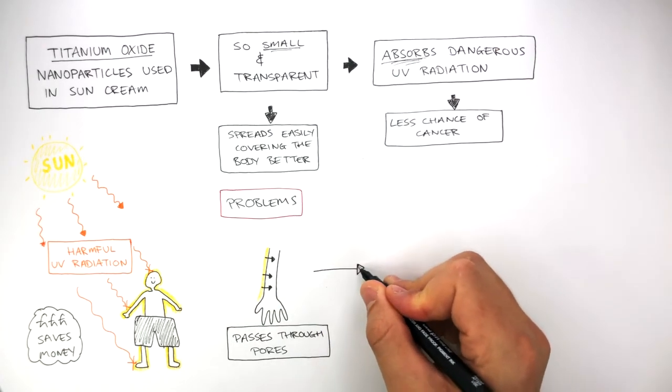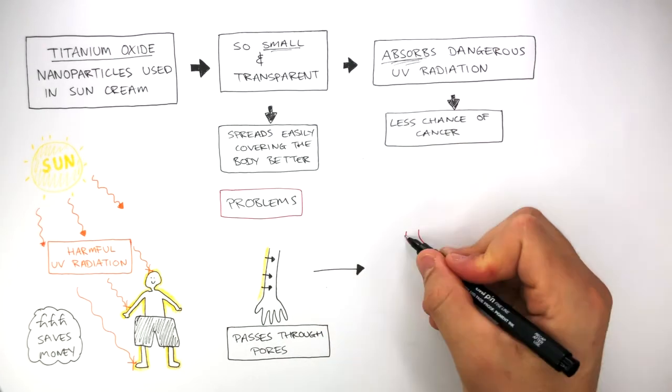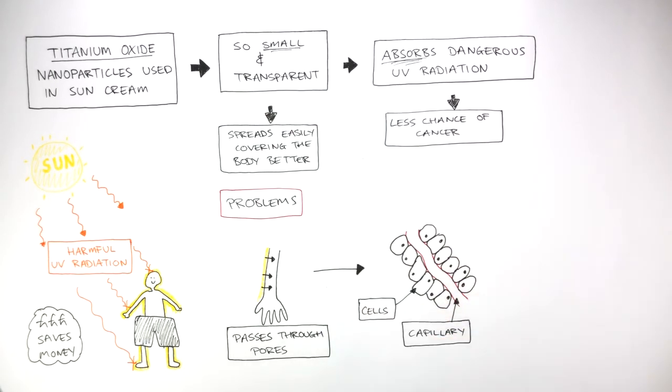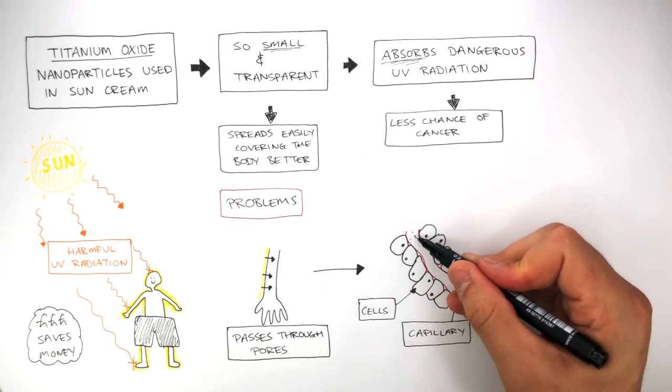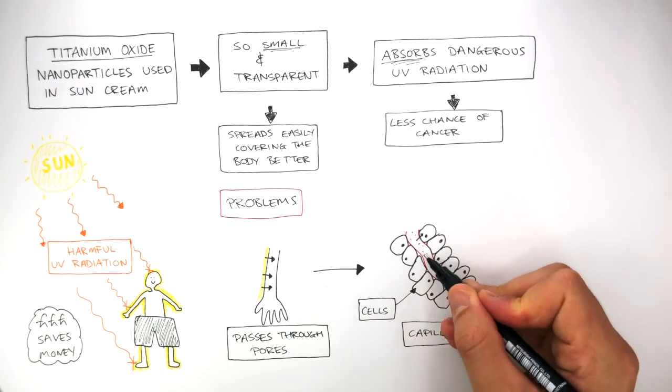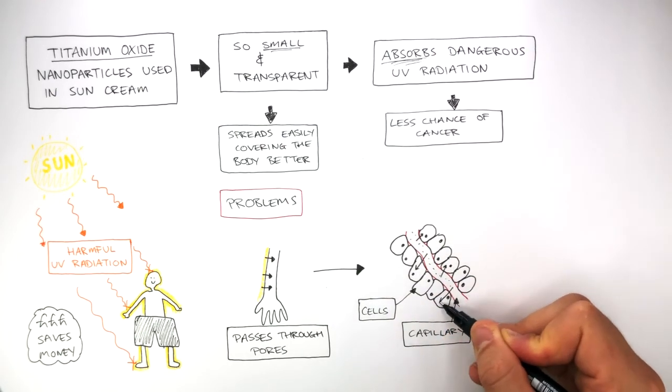To explain how this affects us, here I'm drawing a capillary and these are cells surrounding the capillaries. The nanoparticles flow through the blood in the capillaries.